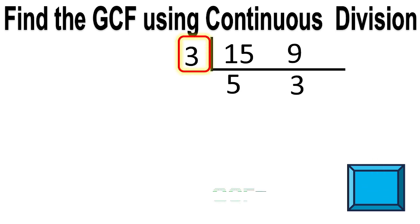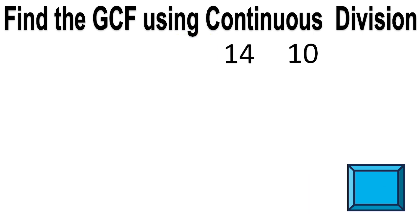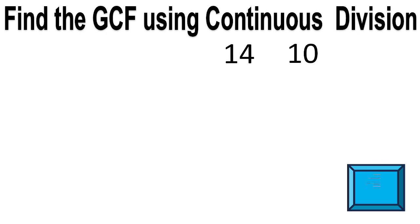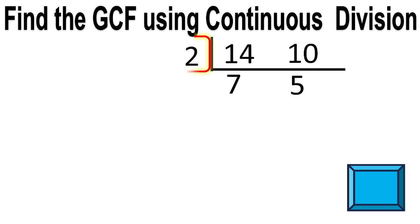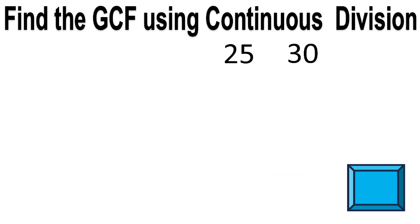Times up. Next: 14 and 10. The answer is 2. The greatest common factor is 2. Next: 25 and 30.